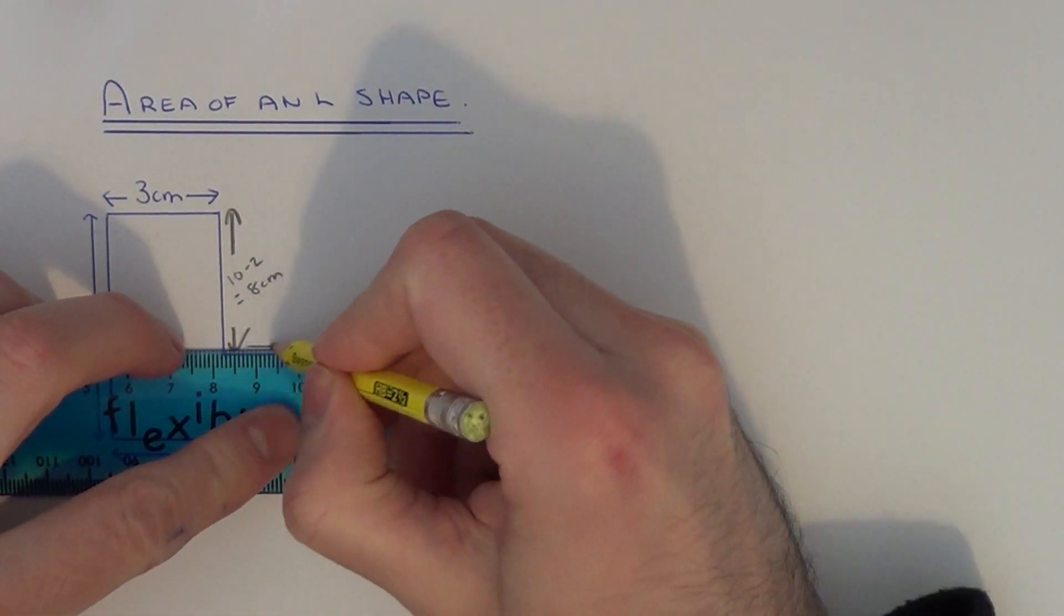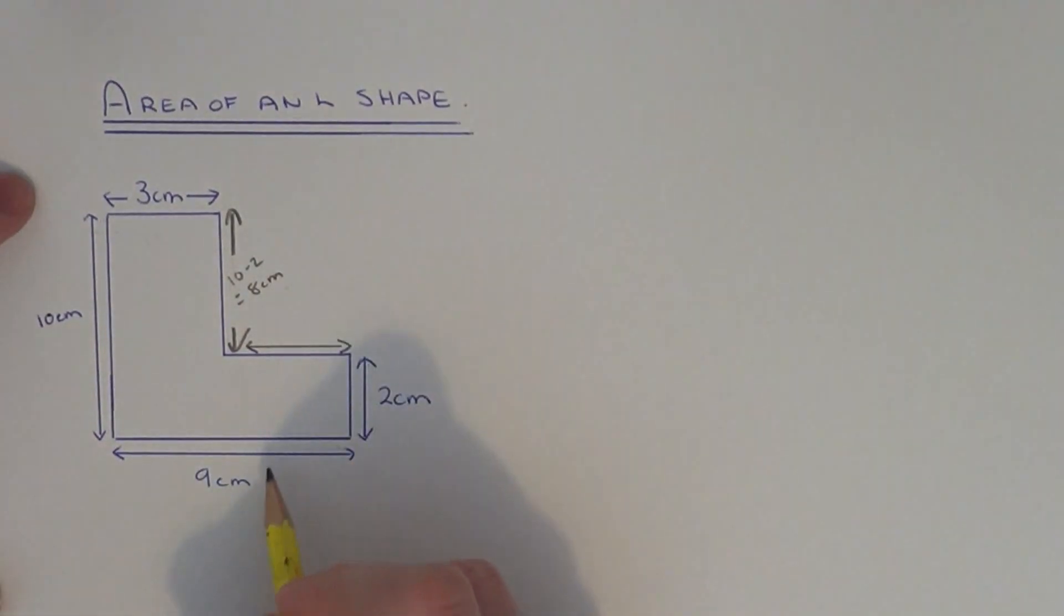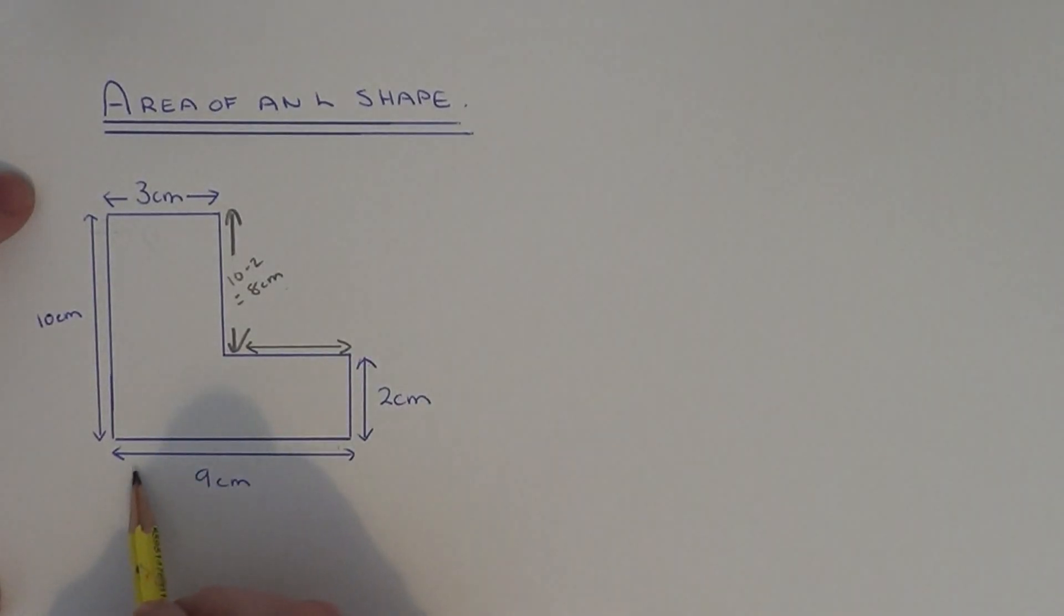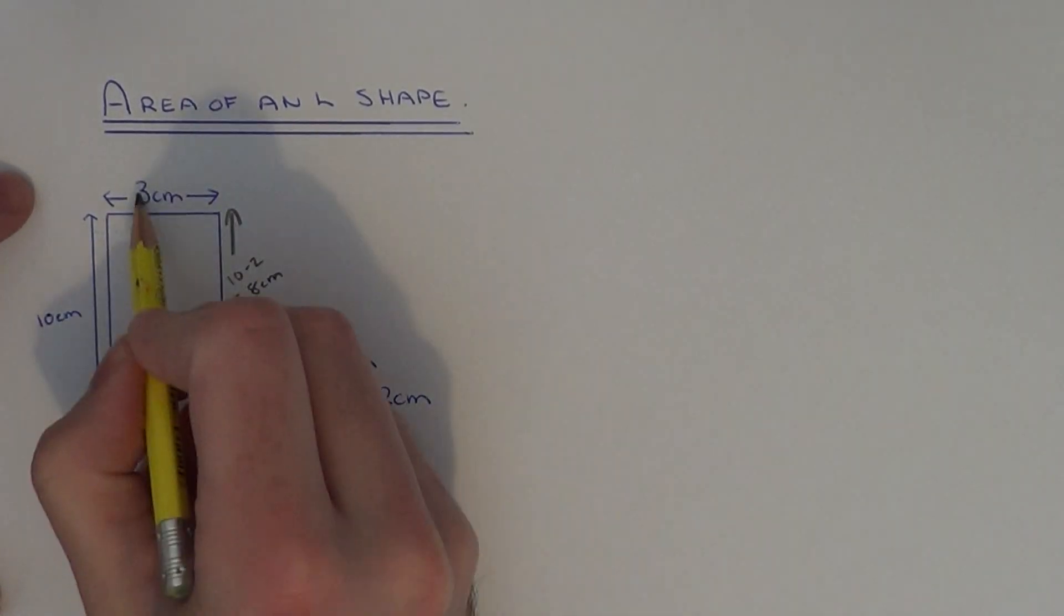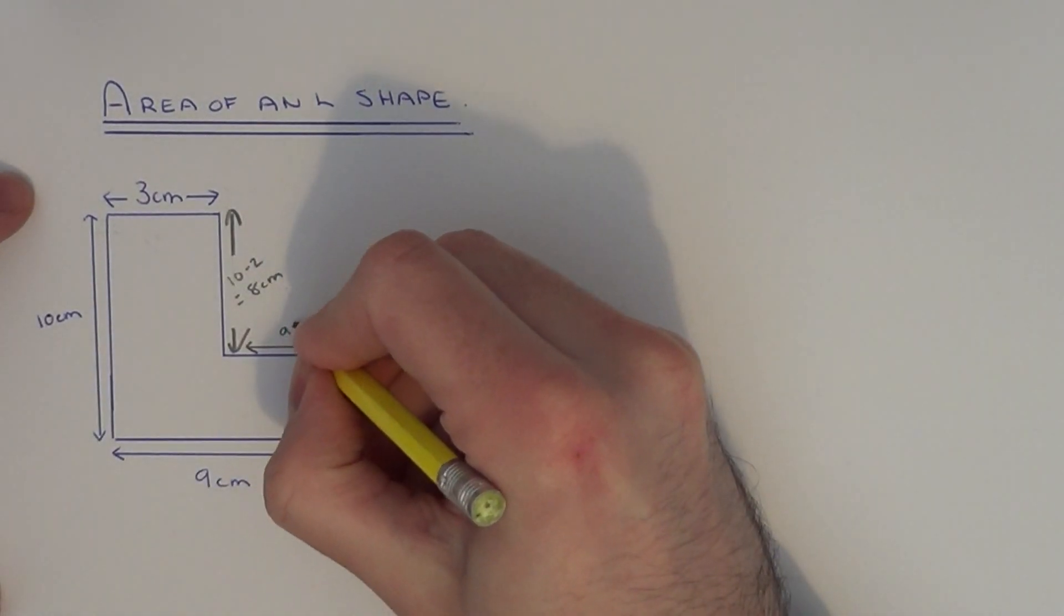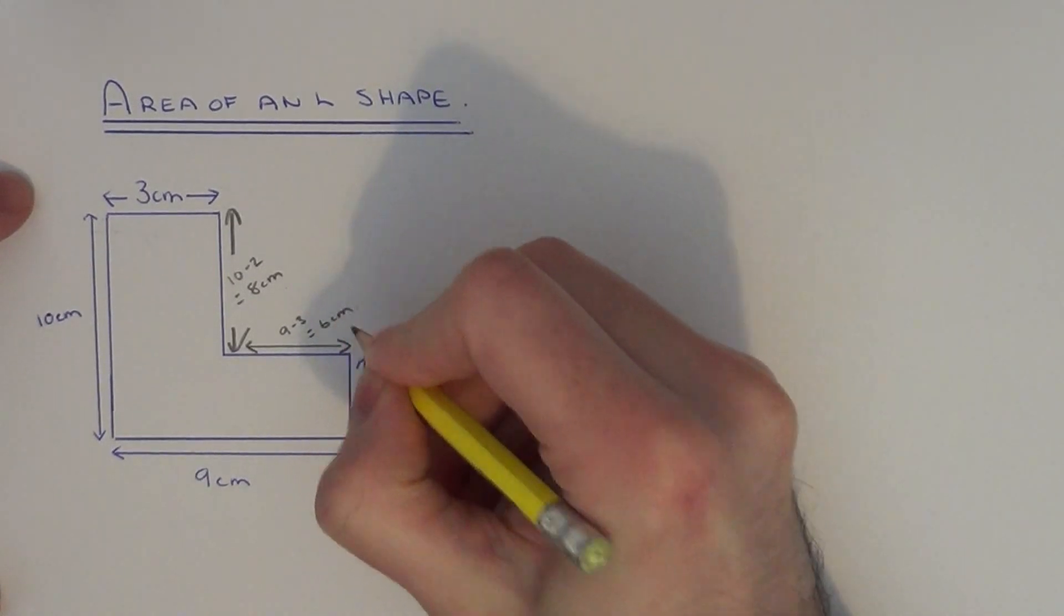Similarly for the one going across, to get this side all you need to do is look at the horizontal lines. So this is nine all the way across and this one is three. So if you do nine take away three this will give you six centimeters.